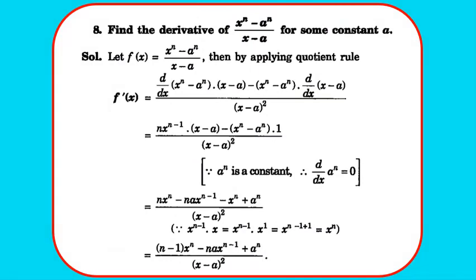Question 8: find the derivative of (x^n - a^n)/(x - a) for some constant a. Applying the quotient rule: f'(x) = [(x-a)·nx^(n-1) - (x^n - a^n)·1] / (x-a)². Expanding the numerator: nx^n - nax^(n-1) - x^n + a^n. Simplifying gives f'(x) = [(n-1)x^n - nax^(n-1) + a^n] / (x-a)².